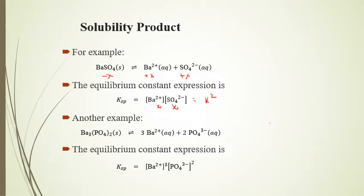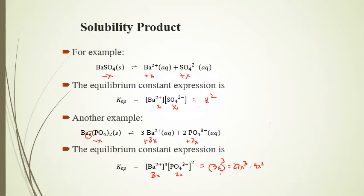In the second example, Ba3(PO4)2, I still have minus X for the solid, but because I have three bariums splitting up, that gives plus 3X, and plus 2X for the phosphate ion. Plugging those into the expression gives (3X)³ times (2X)², which equals 27X³ times 4X², equaling 108X⁵.